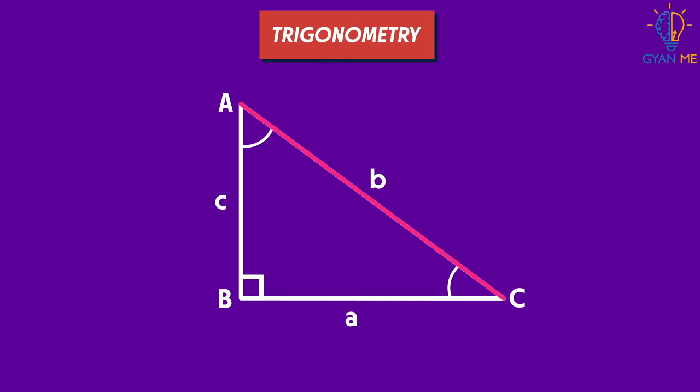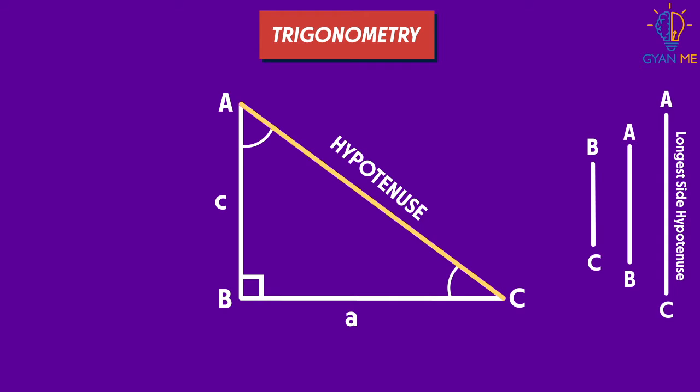Okay, so naming this side is really easy, isn't it? You know it already, right? It is hypotenuse. We know that hypotenuse is the triangle's longest side and that it is opposite to 90 degree angle.